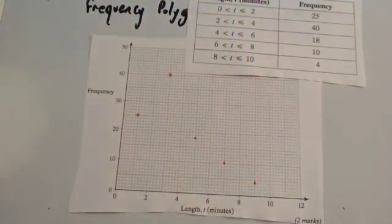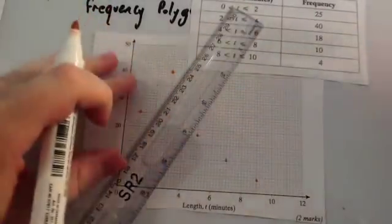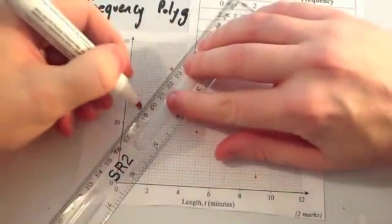So we have now plotted our points. The clue's in the name—frequency polygon—we're now going to join them up with straight lines. So get your ruler and pencil, and you're going to draw them up with straight lines.